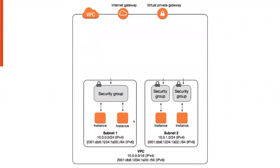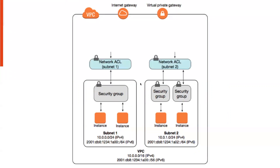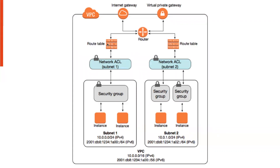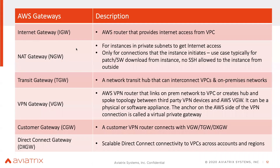Once you've defined your instances, you need to provide some level of security. You can create a security group, which is just a Layer 4 stateful firewall — you define source, destination, IP, port, and say allow or deny. You can apply one security group to multiple instances or have one per instance. They also have the concept of ACL, which is a stateless access control list applied at the subnet level. And then there's a route table and a router that routes traffic out toward the internet or within the same VPC, though you don't have direct access to that router.